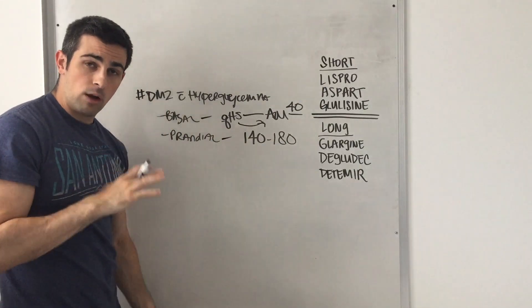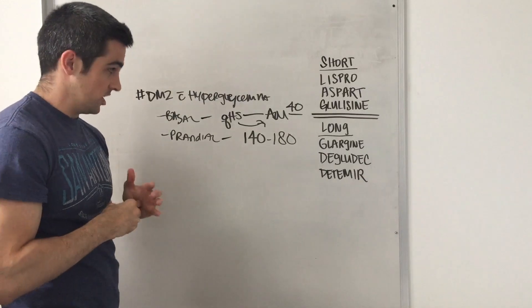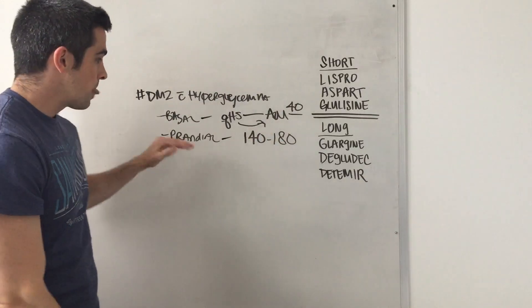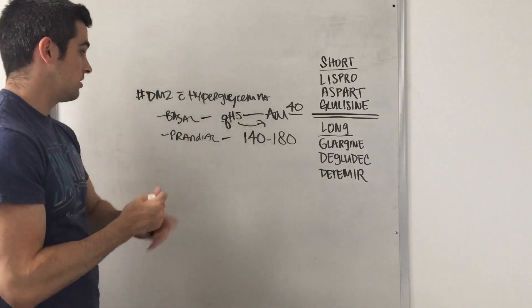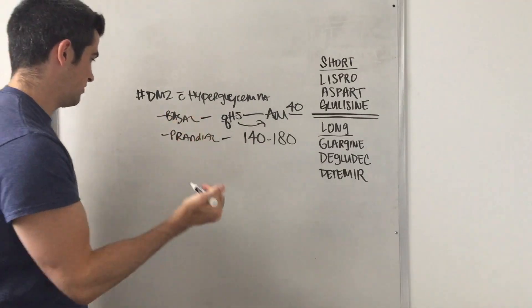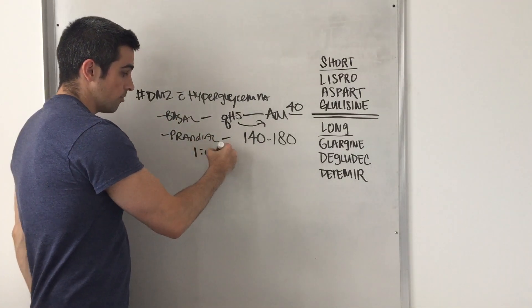Don't overdo their basal. Don't go over that one unit. So 24 is sufficient of glargine or degludec. And your prandials, you're going to assess by looking at their insulin to carb ratio.